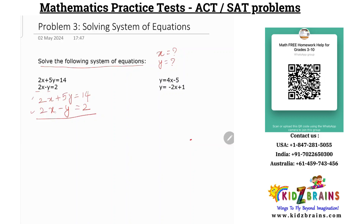Find out one common coefficient. In this case, x has 2 and 2, so this is common. If it is not, check your y coefficients. If they match, good. If you end up in a situation where both equations do not have any common coefficient, then your step would be to make one common. Let us solve this equation and we will encounter those kinds of variety problems — I will let you know how to solve at that point.